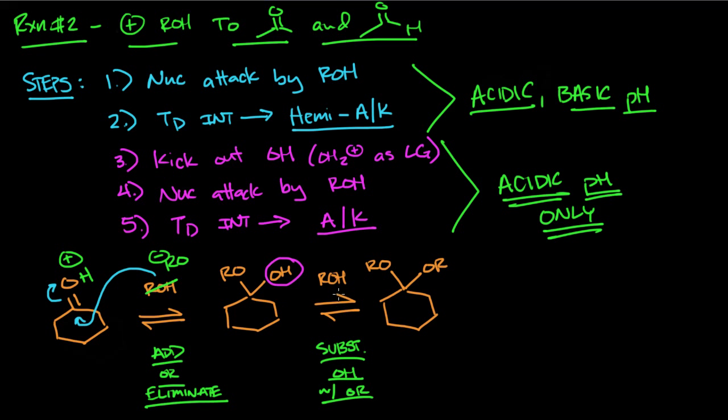The substitution of this OH with another RO group. What you want to do in order to get rid of this OH is you want to protonate it so you get OH2 plus, so that you can kick this thing out.